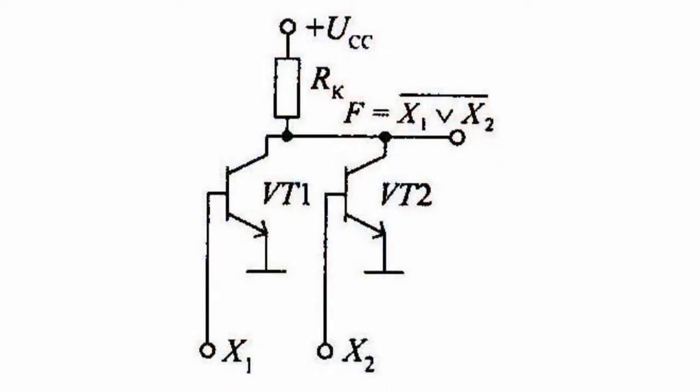Transistor logic or TL elements are built through parallel connection of transistor collectors to the common collector load resistor. Output voltage is tapped off from collectors drawn together. High voltage applied to the inputs makes respective transistor open.